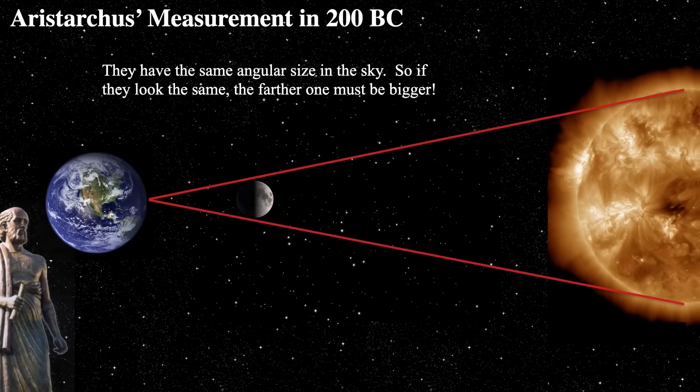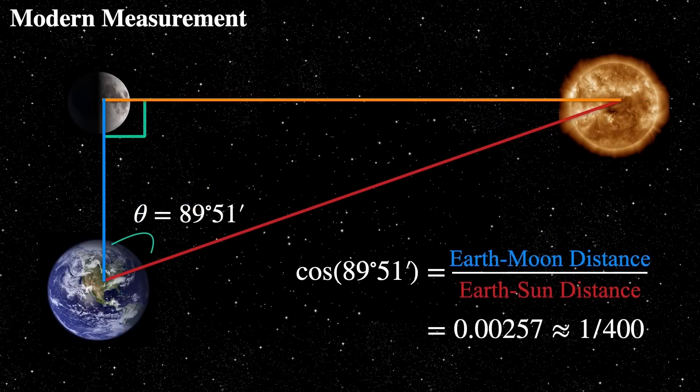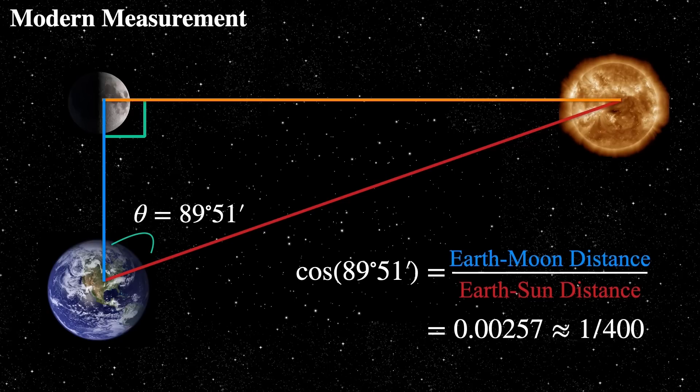Well before 200 BC, it was understood at least to a pretty good guesstimation. Aristarchus's measurements were off by pretty considerably, but that's okay. We have to give him props for trying.